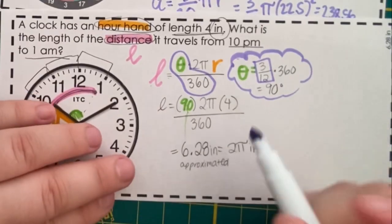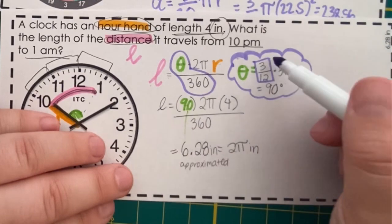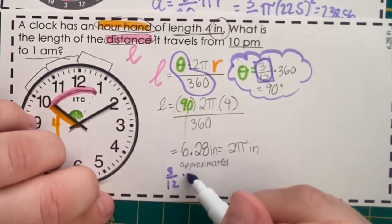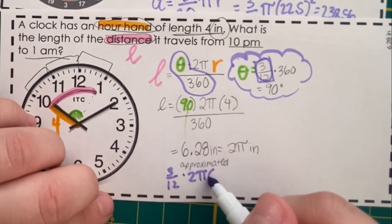Same thing will work down here. Instead of theta over 360, we'll just take the fraction 3 over 12 times 2 pi r.